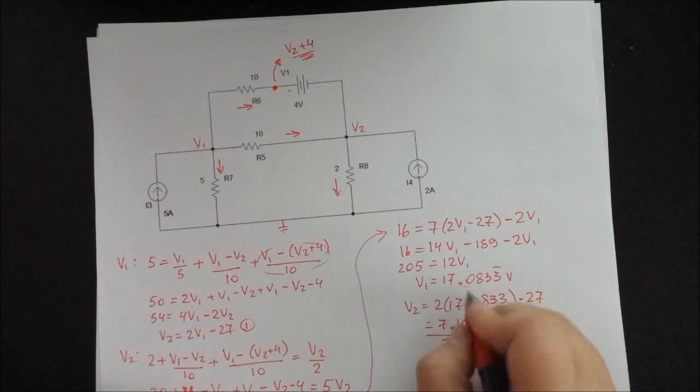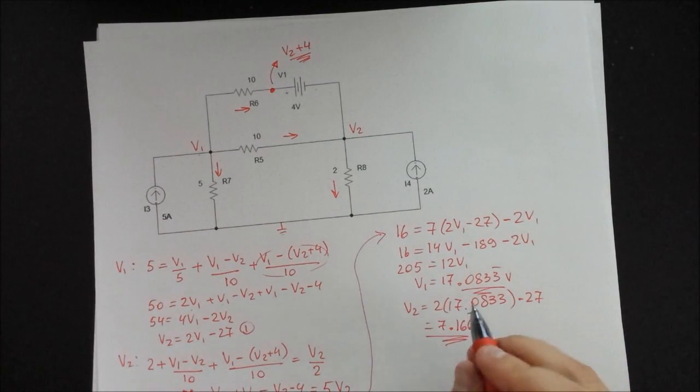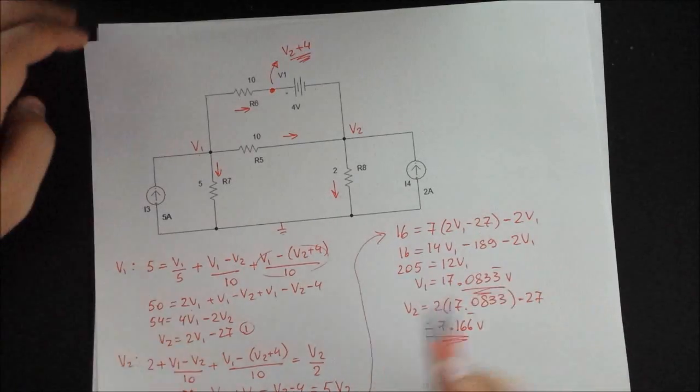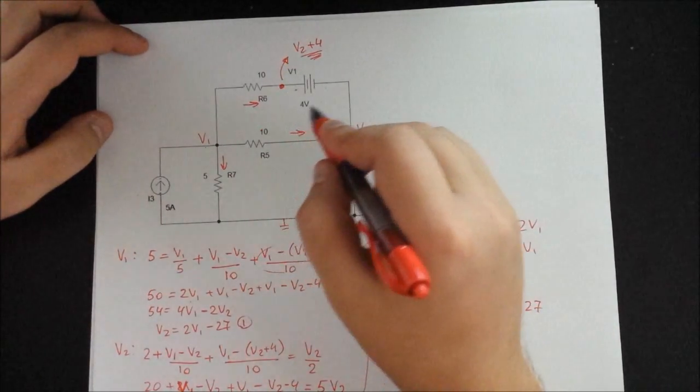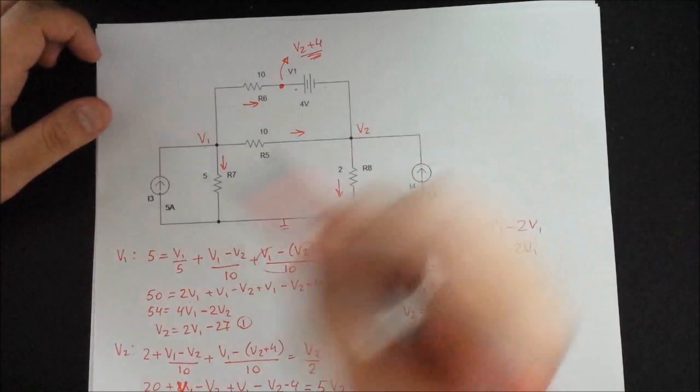And there you have it. You solved for V1 and V2 using nodal analysis. And as I explained in the other example, you can use this to solve for any current that you want within your circuit.